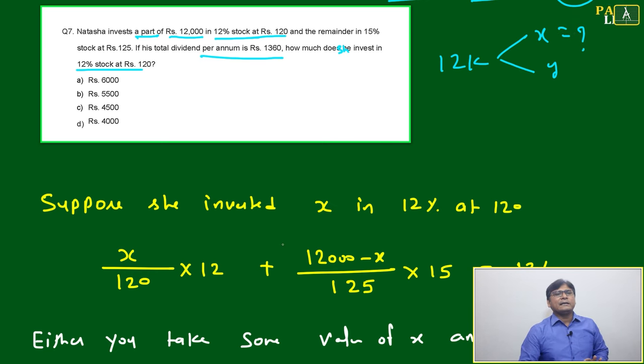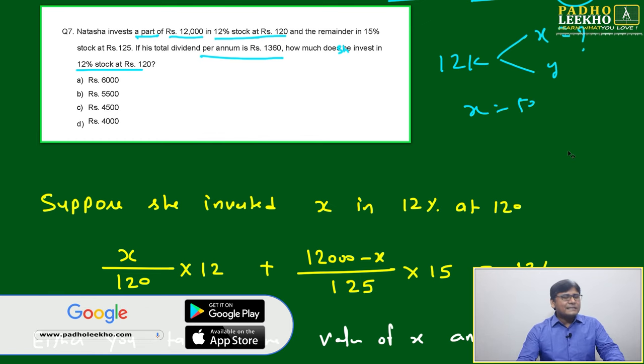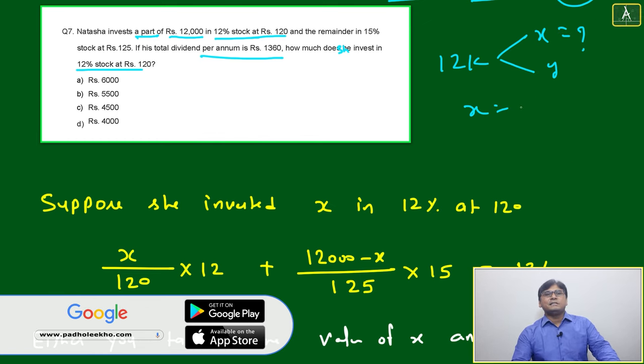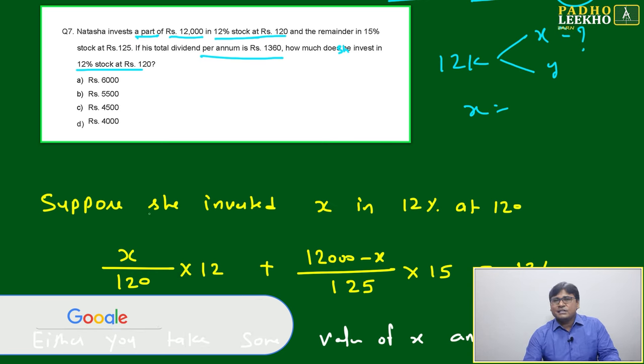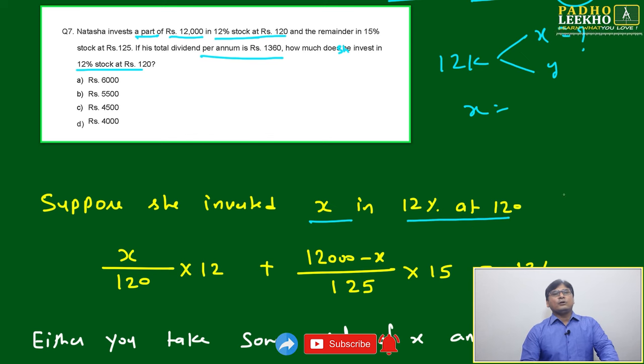This question is not complicated, only a little calculation. You can assume x equals 5,000 or 4,000 to make calculation easy, or you can solve one equation. Suppose she invests x in 12% at 120, then the remaining will be 12,000 minus x. So x divided by 120 times 12 is the dividend from the first investment.